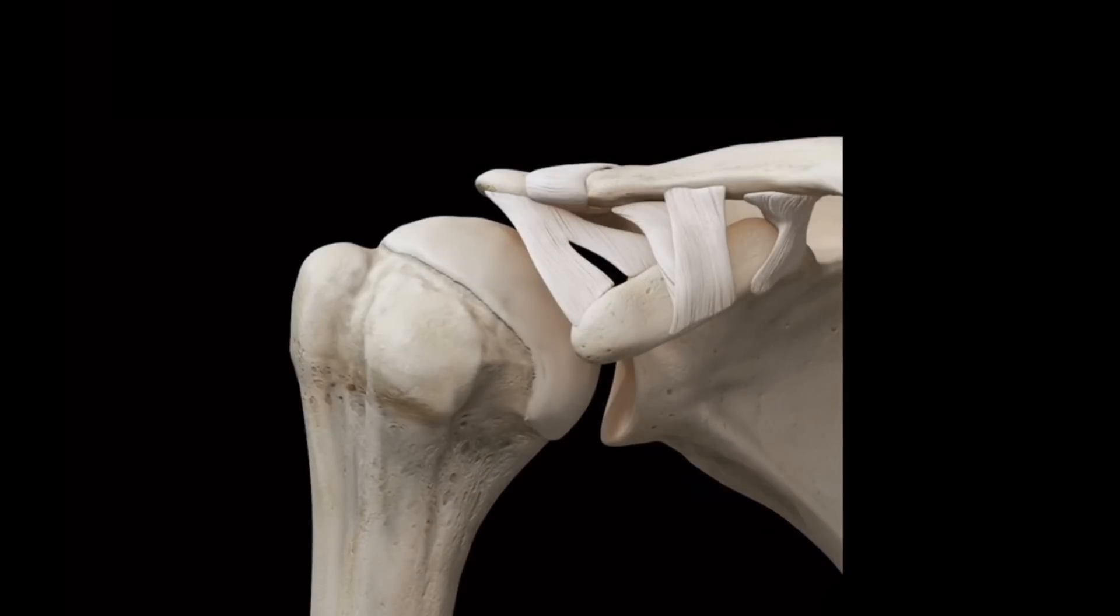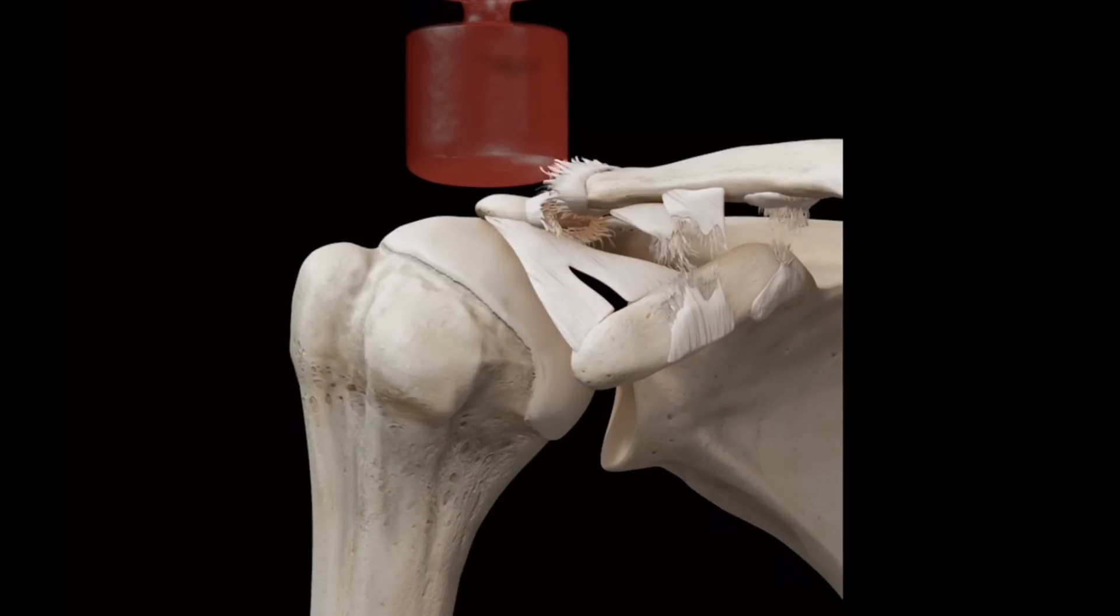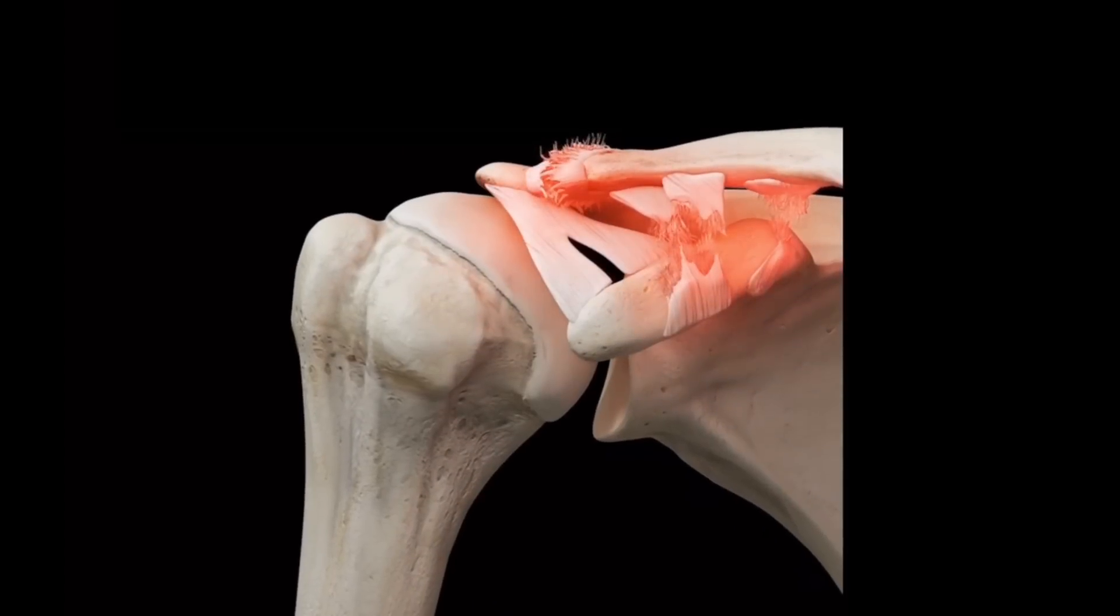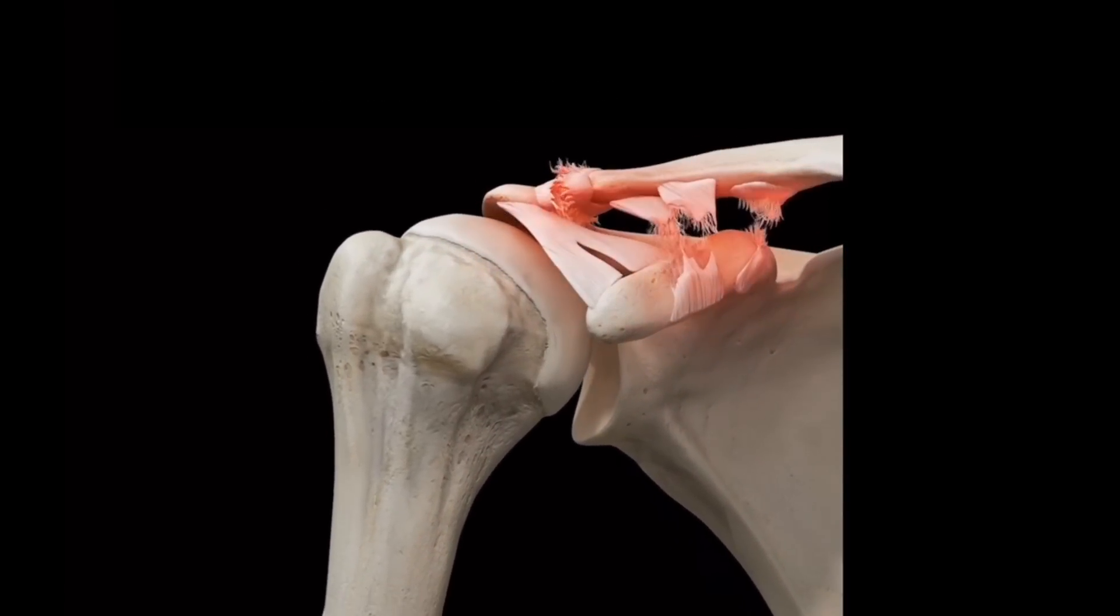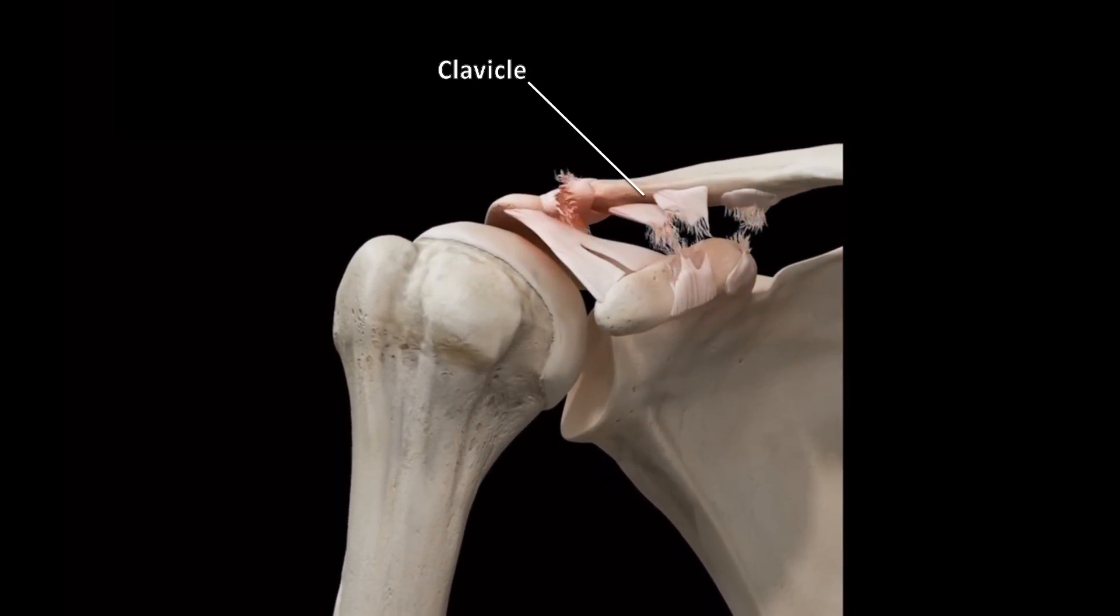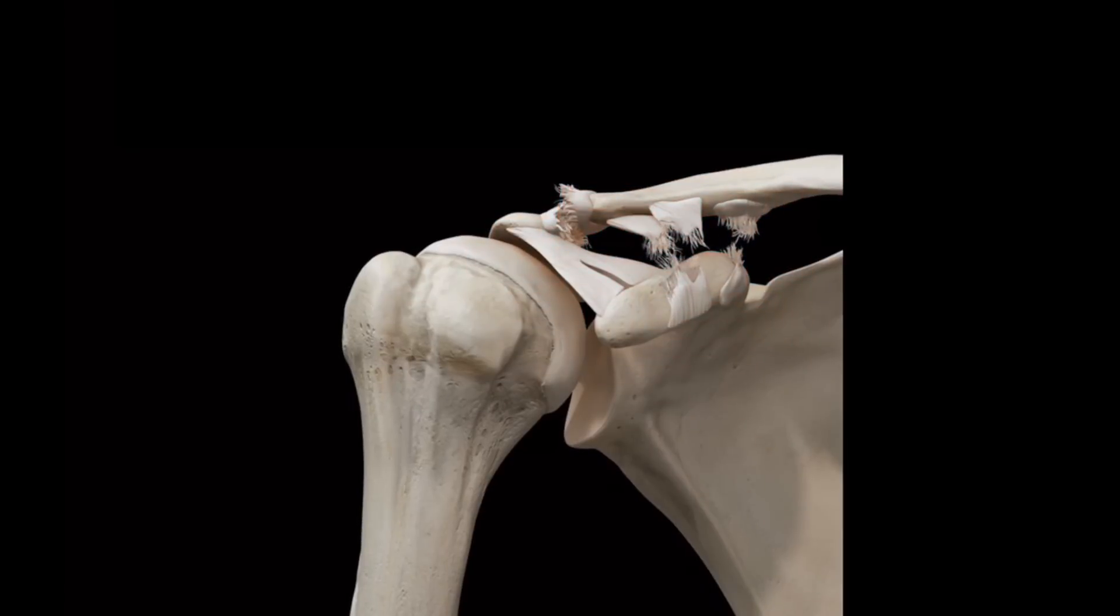In the most serious type, a grade 3 injury, the external blow or force is great enough to result in tearing of the ligaments around the AC joint, as well as the coracoclavicular ligaments, which connect from the clavicle to another extension of bone from the scapula, known as the coracoid process.